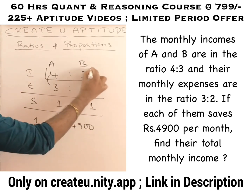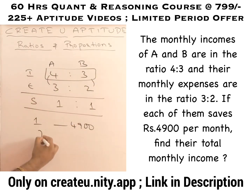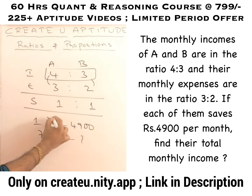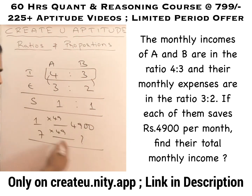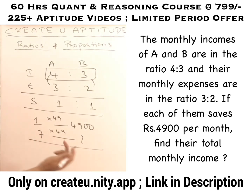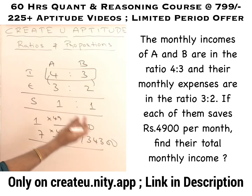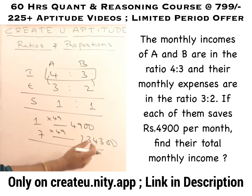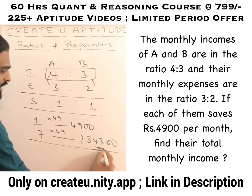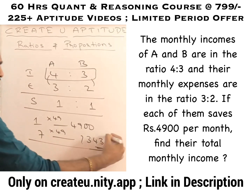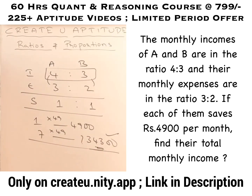The total income of both A and B is 7 parts. If one part is 4,900 rupees, then 7 parts is 7 into 4,900. Since 4,900 is 49 times 100, and 49 is 7 squared, 7 into 49 is 7 cubed, which is 343 — so the answer is 34,300 rupees. That is the total monthly income of both together.